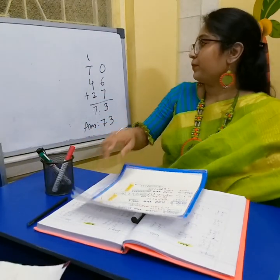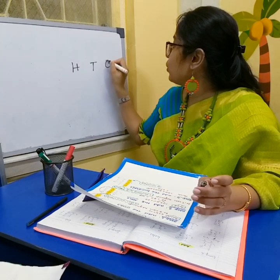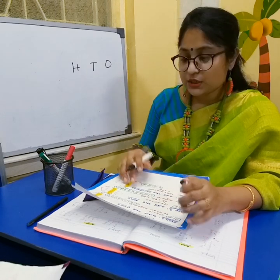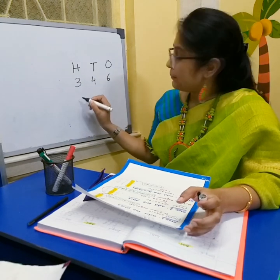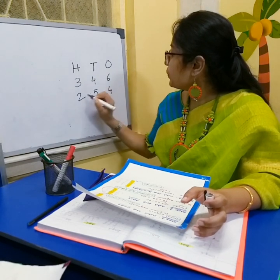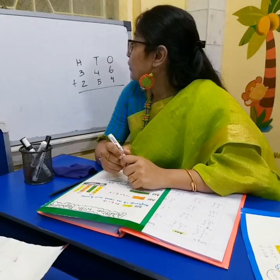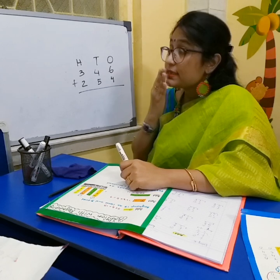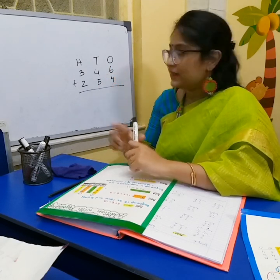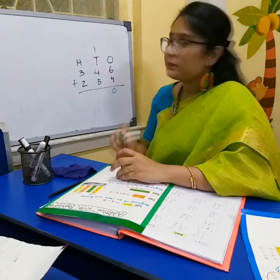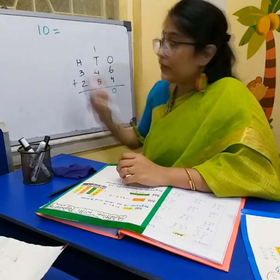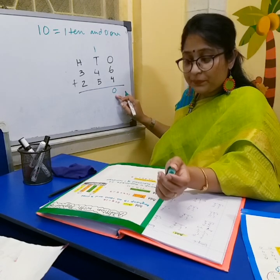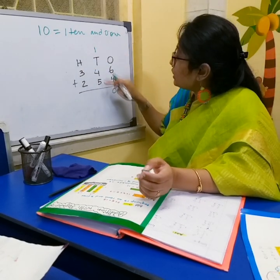So let's do H-T-O. H stands for hundreds, T stands for tens, and O stands for ones. Here is the example: 346 plus 254. In the ones column it is 6 plus 4, which equals 10. So we write 0 in the ones place and carry 1, because 10 means 1 ten and 0 ones. The 1 goes on top of the tens column.